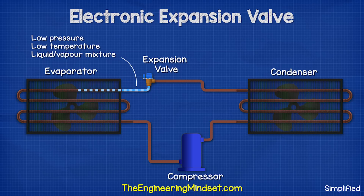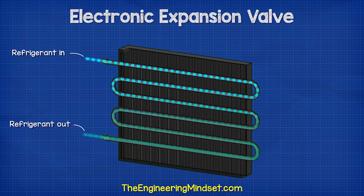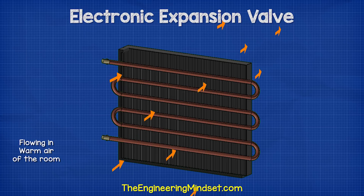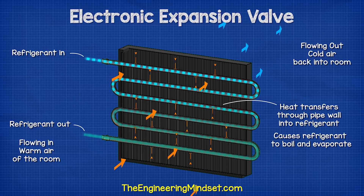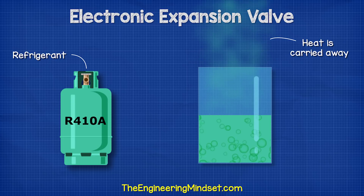The refrigerant is entering the evaporator as a low pressure, low temperature liquid-vapor mixture. It flows on the inside of the pipe and at the same time a fan is moving the ambient air of the room over the outside of the pipe. This causes the refrigerant to boil. It will absorb the heat from the air through the pipe wall and then it evaporates.